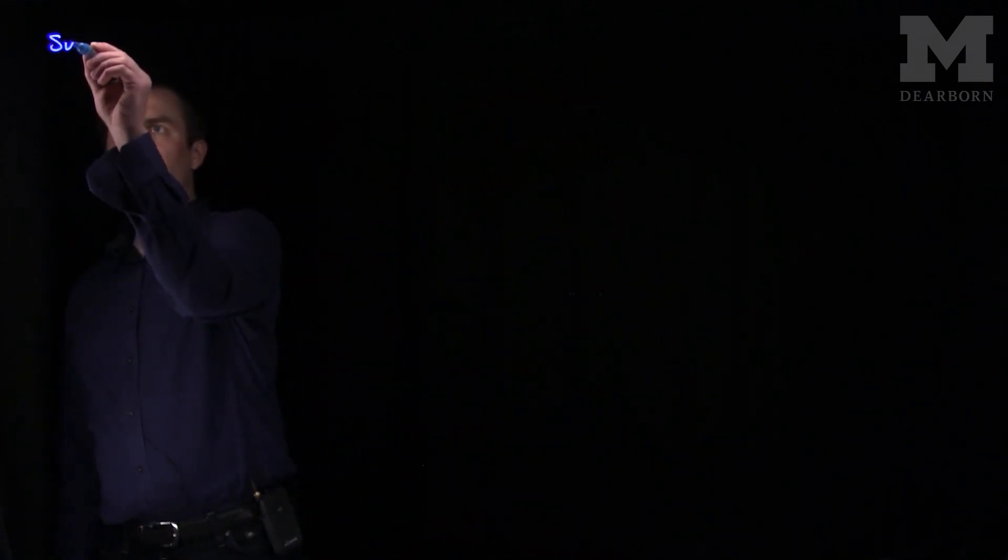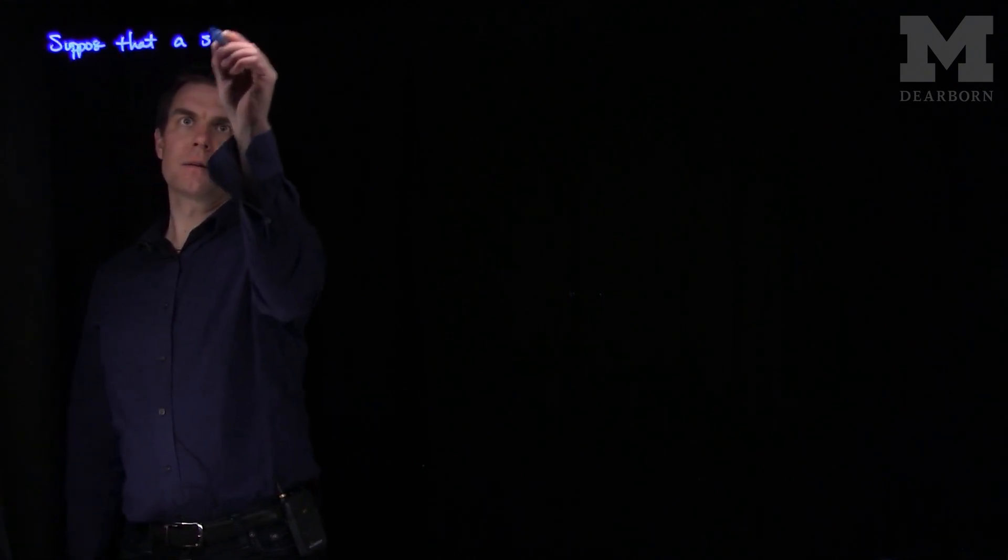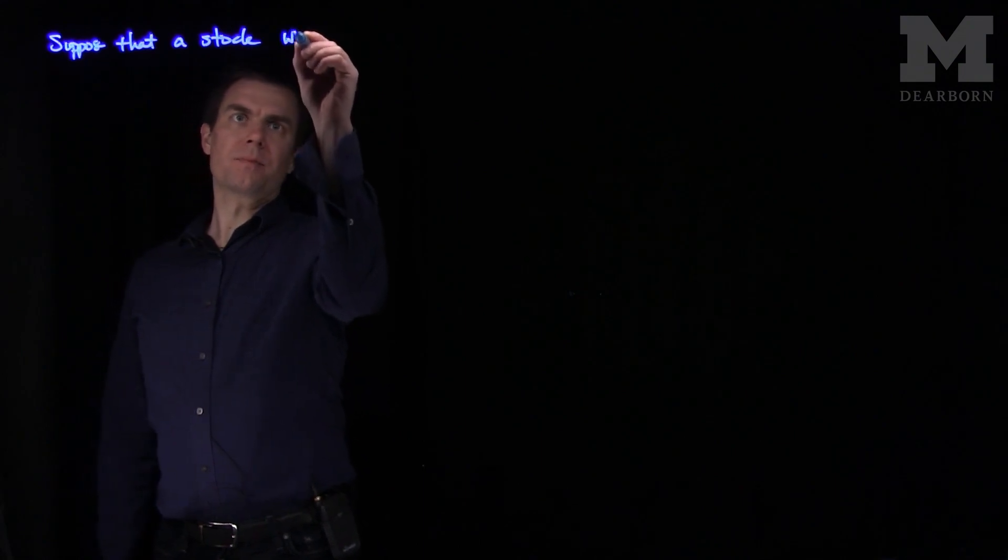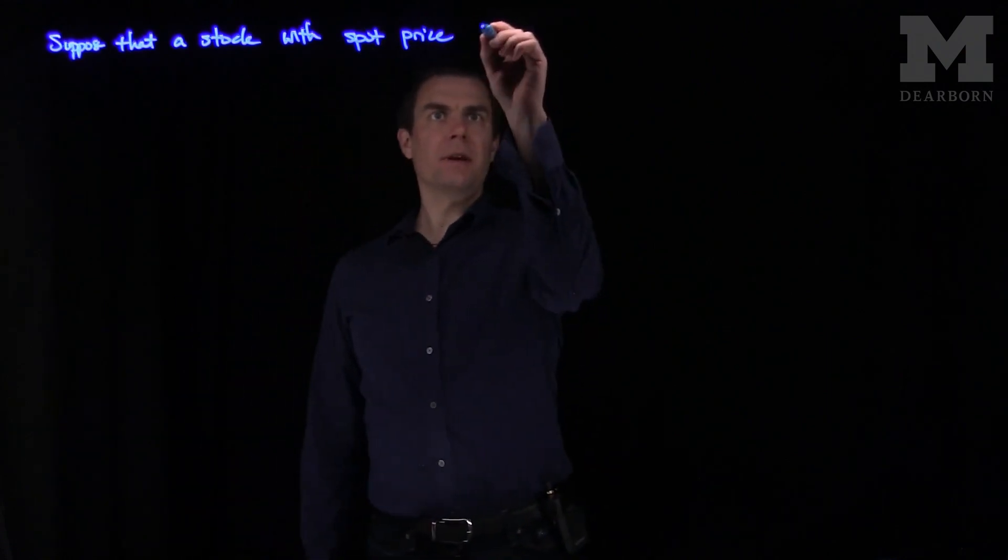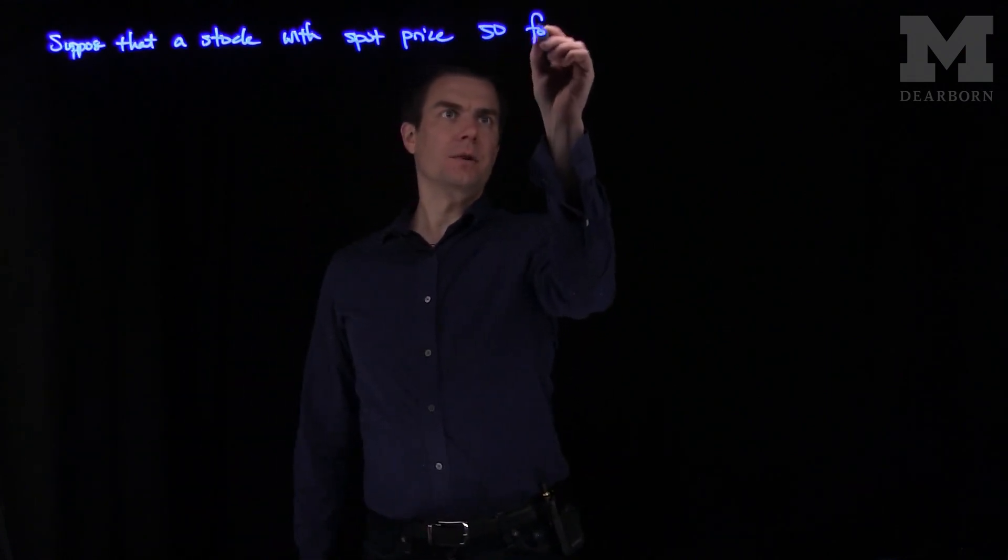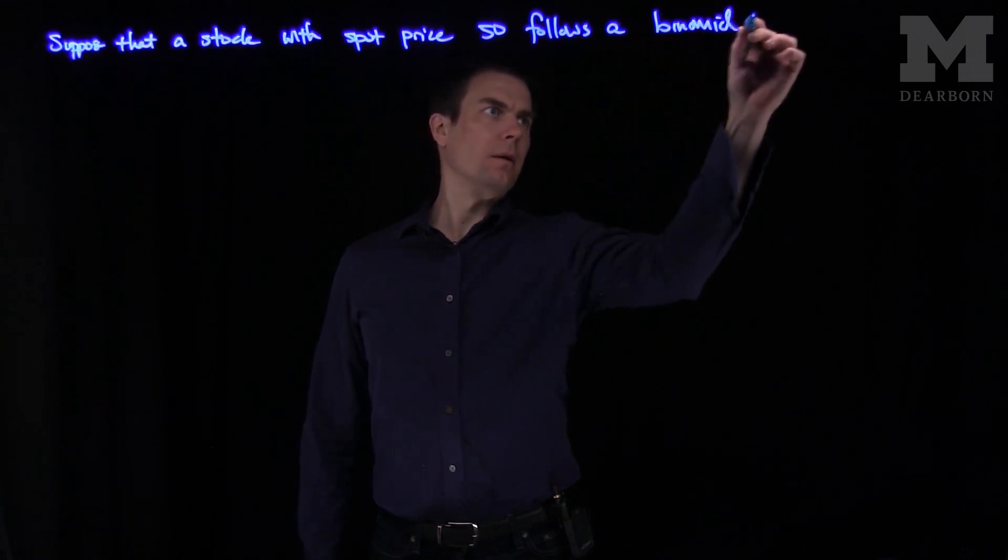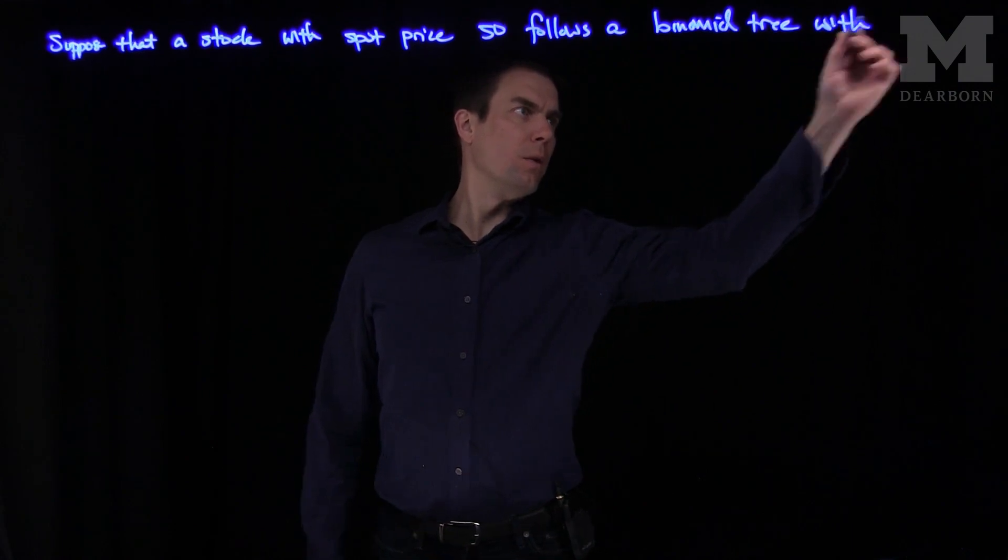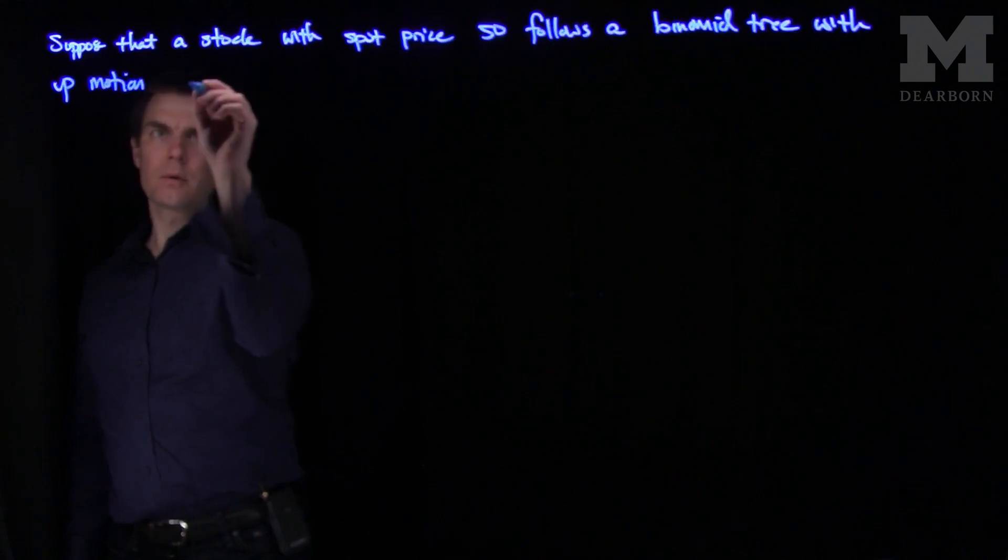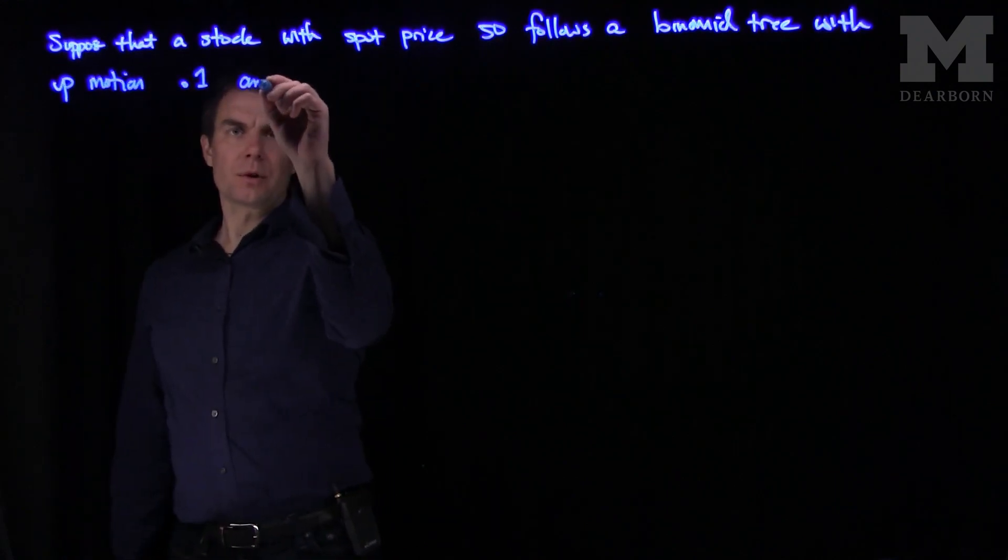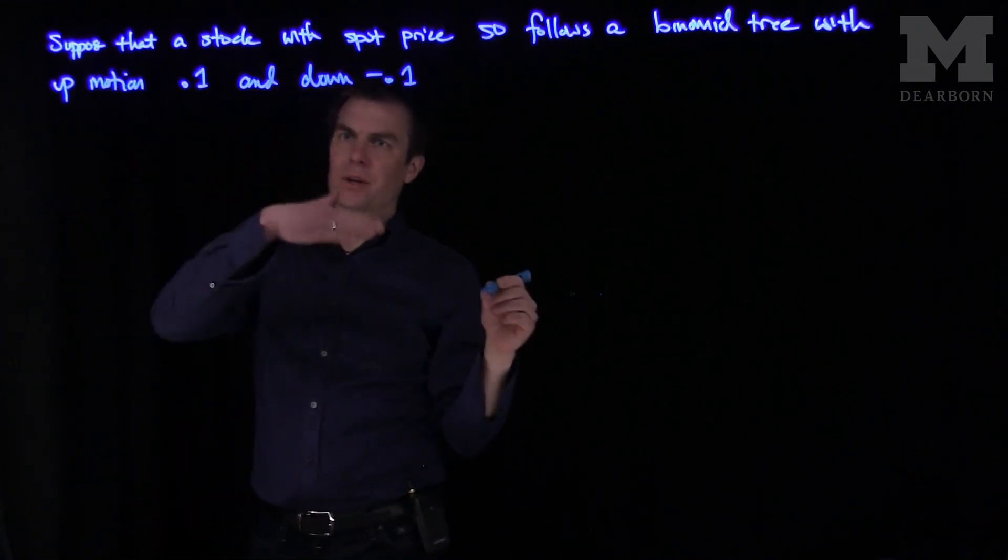Let's suppose that a stock with spot price 50 follows a binomial tree with up motion 0.1 and down motion negative 0.1. So it goes up by 10% or down by 10%.